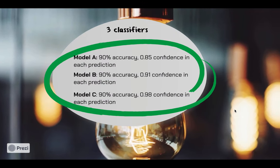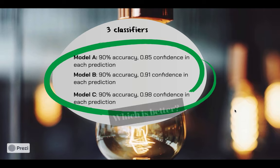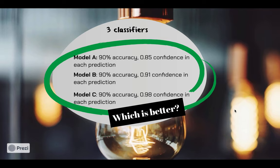Let's assume there are three classifiers. Model A predicts with 90% accuracy and a confidence of 0.85. Model B predicts 90% accuracy with a confidence of 0.91. And Model C also has 90% accuracy but the confidence is much higher at 0.99. When I say confidence, I mean predicted probability. The question is: which one of these models is better?